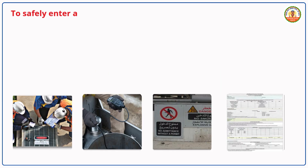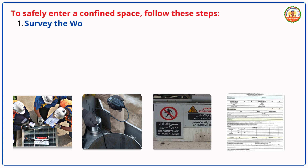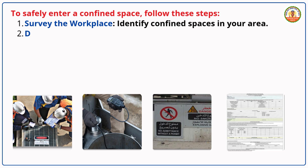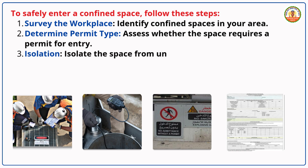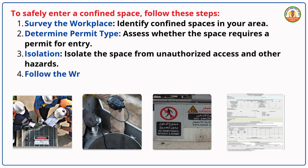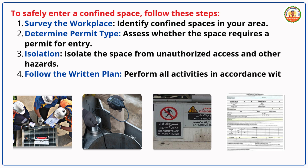Confined space entry steps: To safely enter a confined space, follow these steps. First, survey the workplace and identify confined spaces in your area. Second, determine the permit type — assess whether the space requires a permit for entry. Third, isolation — isolate the space from unauthorized access and other hazards. Finally, follow the written plan and perform all activities in accordance with a documented plan.